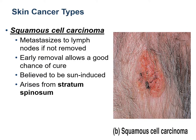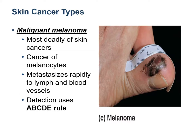The second type is squamous cell carcinoma, which starts in the stratum spinosum and is thought to be induced by long exposure to the sun. It usually metastasizes to lymph nodes if not detected early. The third and most dangerous type is malignant melanoma — this is cancer of the melanocytes and has very fast metastasis. Its detection uses a rule known as the ABCDE rule.